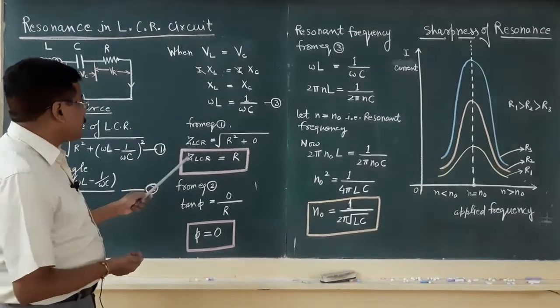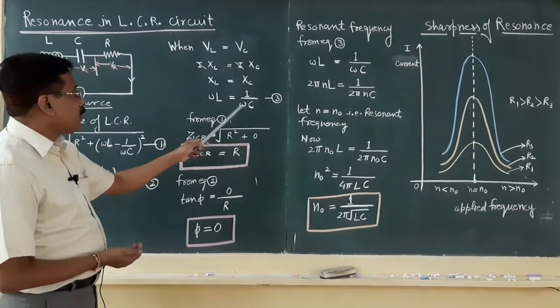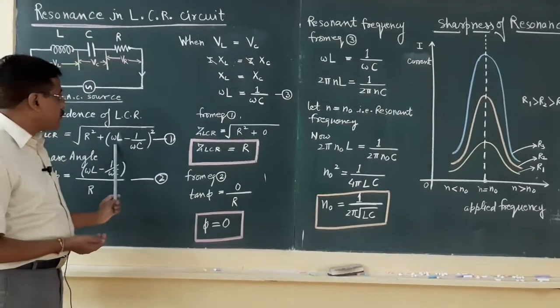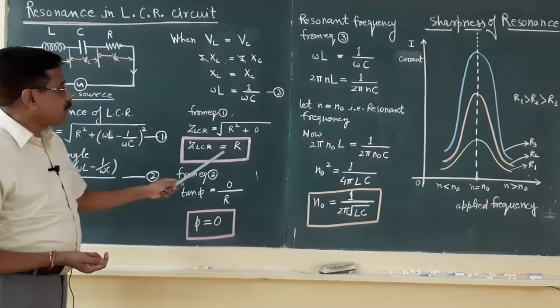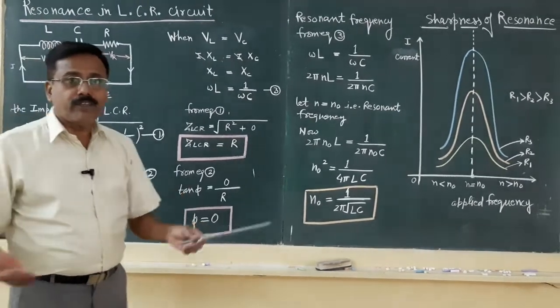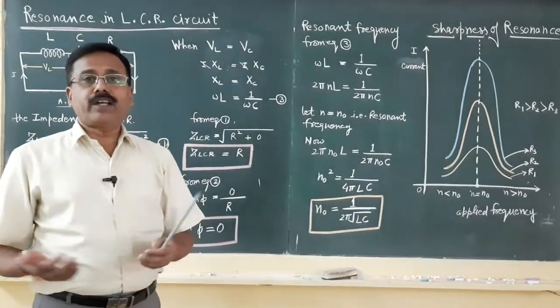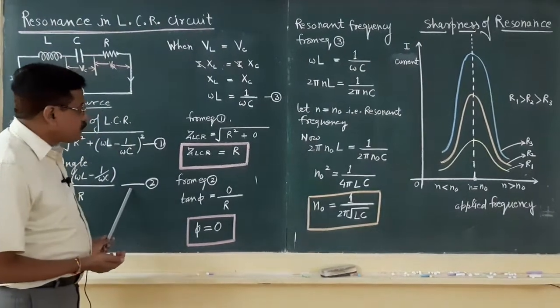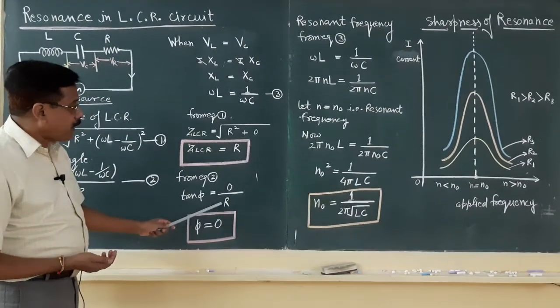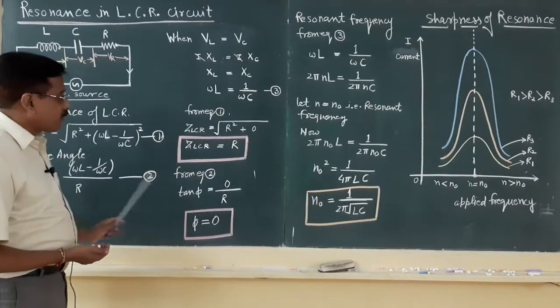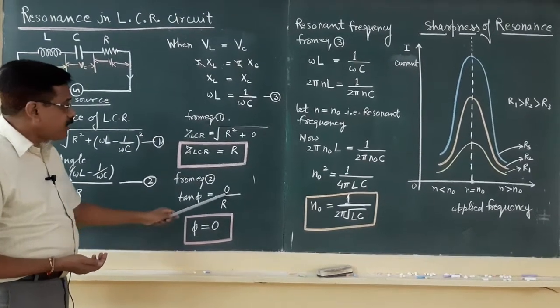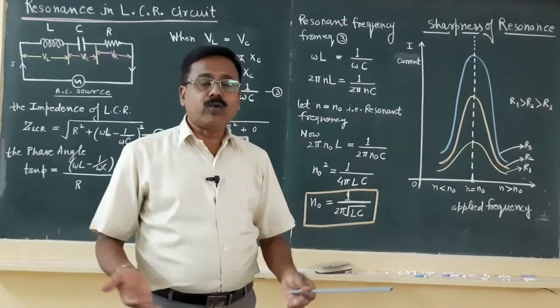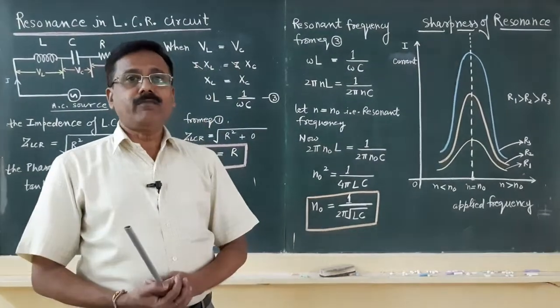From equation 1, by putting omega L equals 1 by omega C, Z_LCR equals root of R square plus 0, because these two terms are equal. Then Z_LCR equals R. It means the impedance of LCR circuit is minimum, equal to the resistance offered by the connected resistor. If you come to equation number 2, you will find tan phi equals 0 by R, because these two terms are equal. That is tan phi equals 0, hence phi equals 0. What's the meaning of phi equals 0? It means voltage and current both are in the same phase.